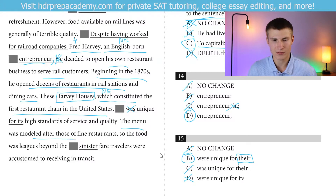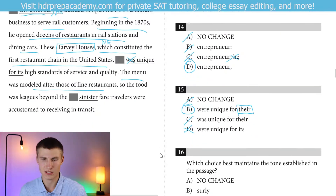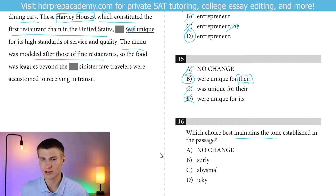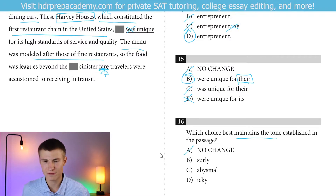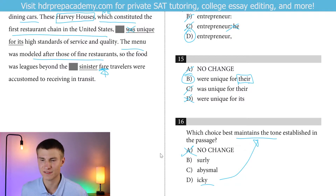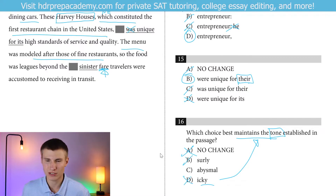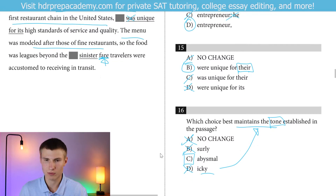The menu was modeled after those of fine restaurants, so the food was leagues beyond the — and it looks like we're going to have a tone question here. We have to maintain the tone established in the passage. We're describing the food as leagues beyond the fare — keep in mind, 'fare' is referring to the food. We wouldn't describe food as 'sinister,' and we wouldn't use 'icky' because it doesn't fit the tone. Between 'abysmal' and 'surly' — we wouldn't use 'surly' to describe food, but we would describe poor food as 'abysmal.' That maintains our tone. So we can go ahead and keep moving.